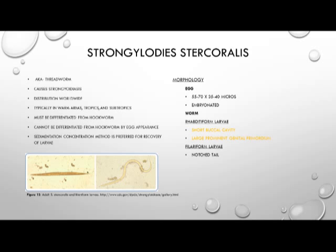Strongyloides stercoralis, also known as the threadworm, causes strongyloidiasis. Distribution is worldwide but typically seen in warm areas in the tropics and subtropics. It must be differentiated from the hookworm, but cannot be differentiated by egg appearance as it is very similar. The sedimentation concentration method is the ideal recovery of the larvae. The egg morphology is very similar to the hookworm at 55 to 70 by 35 to 40 microns; however, Strongyloides stercoralis has an embryonated egg, while Ancylostoma duodenale and Necator americanus have a thin shell.